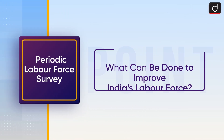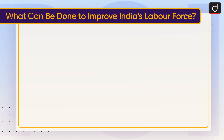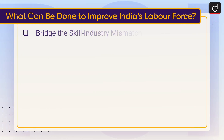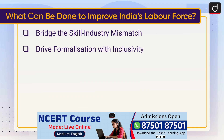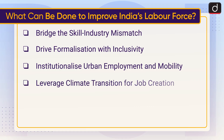Moving on to what can be done to improve India's labour force: bridge the skill-industry mismatch, drive formalisation with inclusivity, institutionalise urban employment and mobility, leverage climate transition for job creation, and design gender labour reforms to incentivise employers.